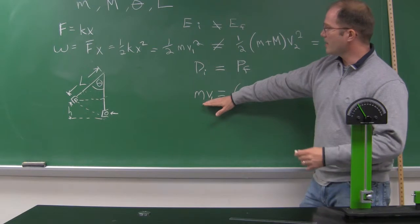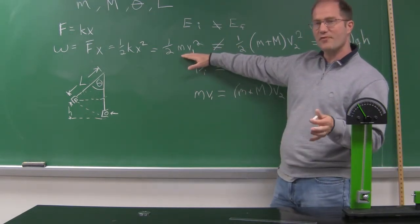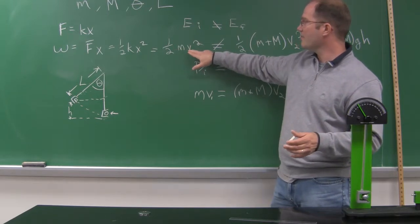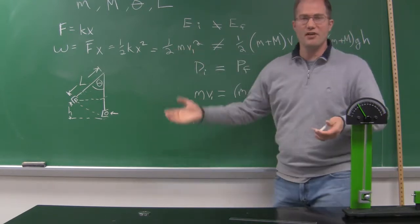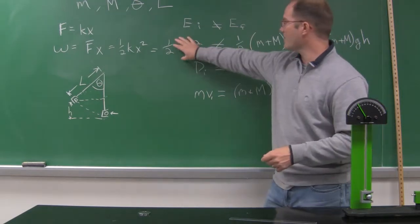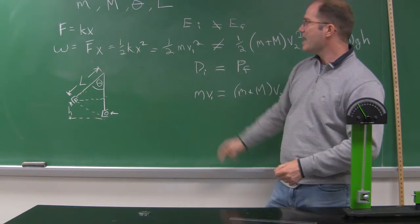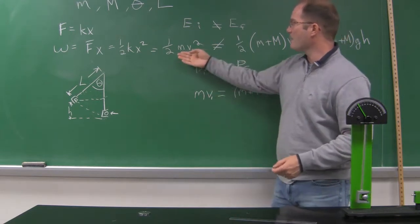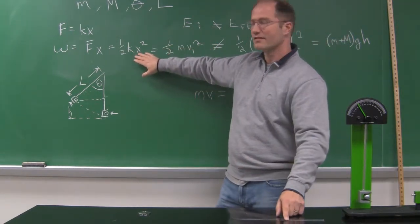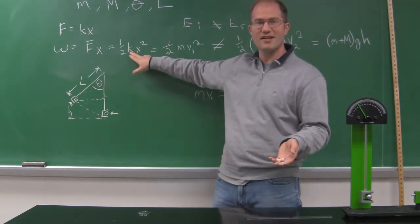Knowing V₁, we put it back into the kinetic energy just before the collision: one-half little m times V₁ squared. Now we know what the energy was before the collision — it's greater than after the collision. We used momentum to bridge it. And so, knowing this, and knowing what X is — our displacement of the spring — we can determine K, the spring constant, and also calculate what the average force was when you depressed the spring.